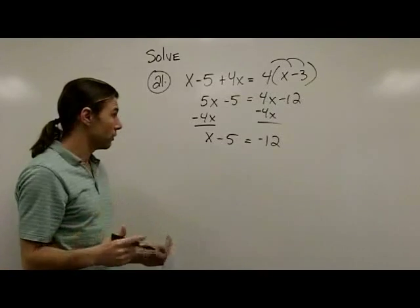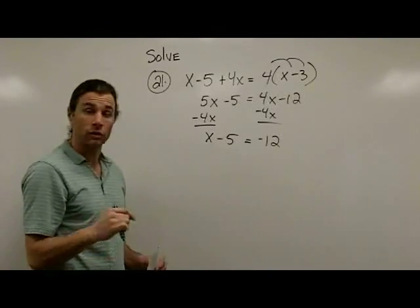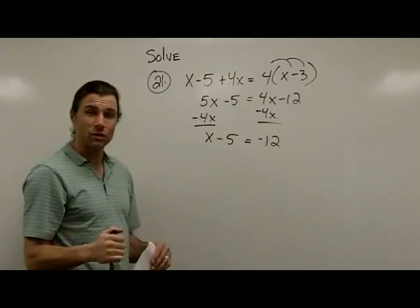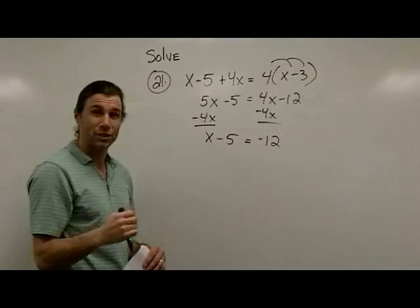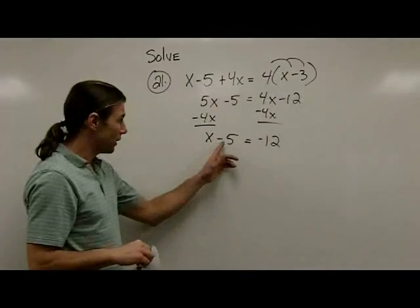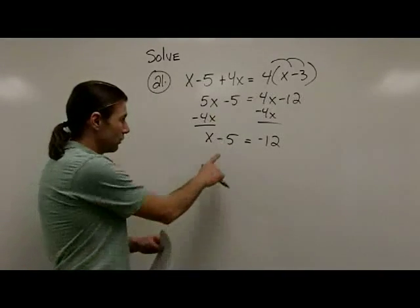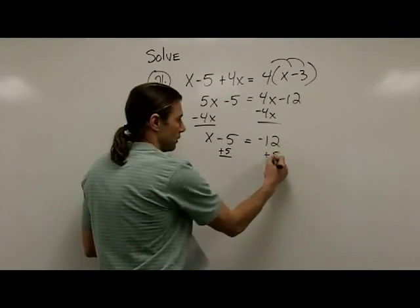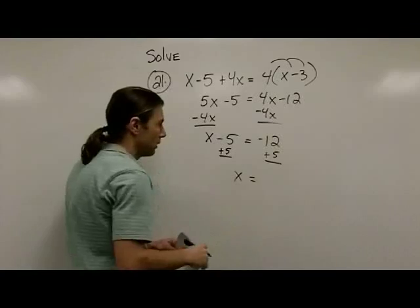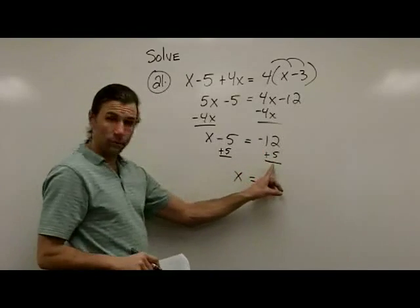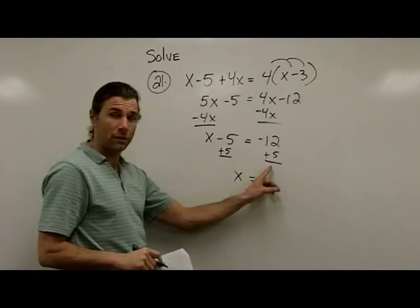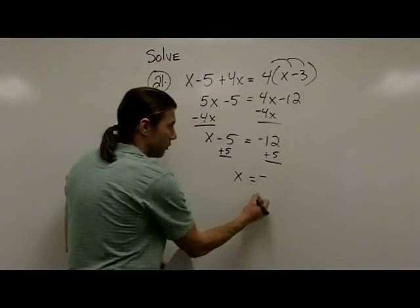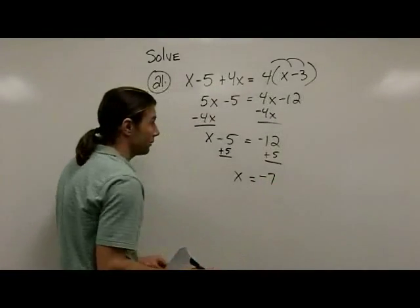Now step 3 is to undo addition or subtraction on the variable side. I do have some subtraction here, so to get rid of the minus 5, I'm going to add 5 to both sides. A negative 12 plus a positive 5 — those partially cancel, and I have 7 negatives left over, giving me x equals negative 7.